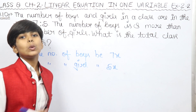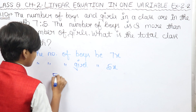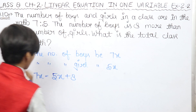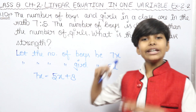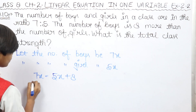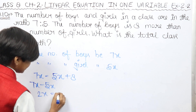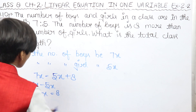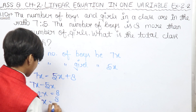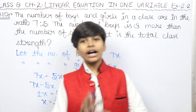Boys are 8 more than the number of girls. So if girls are 5x, then boys are 8 more, giving us the equation 7x = 5x + 8, which simplifies to 2x = 8. Sending 2 to the other side, x is equal to 4. The value of x is 4.